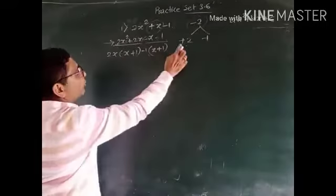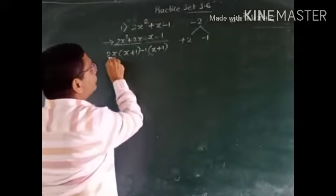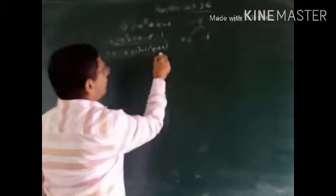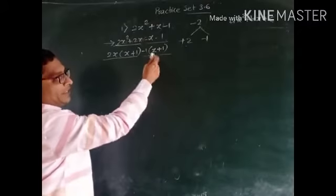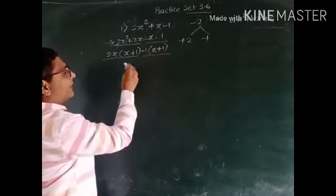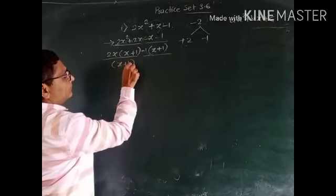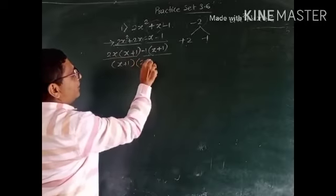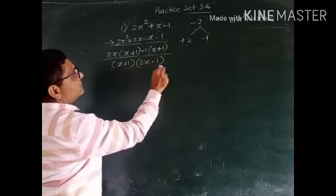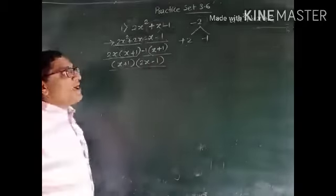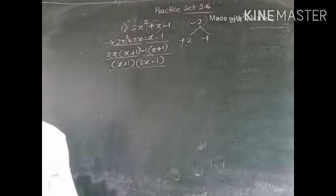This 4-term polynomial is transformed into two terms. In these two terms, (x + 1) is the common bracket, and the remaining terms appear in the second bracket. These are the factors of the given polynomial.